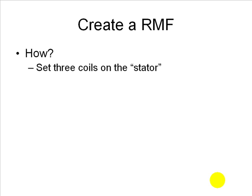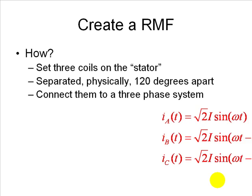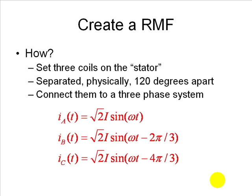We set up three coils on the stator, the part of the machine that doesn't move. We separate those coils by 120 electric degrees, and in those coils we set up a set of three-phase currents like so.